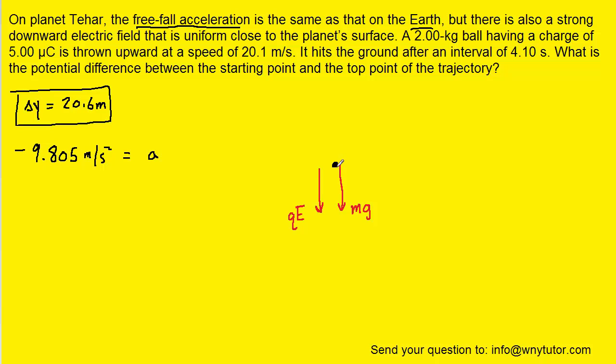Now it turns out there will be two forces acting on the ball. There's the downward gravitational force, which is mg, and then there is the downward electric force that's equal to q times E. We want to explain where that's coming from.